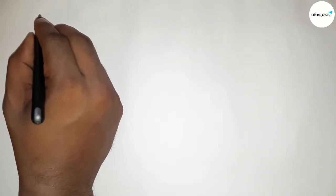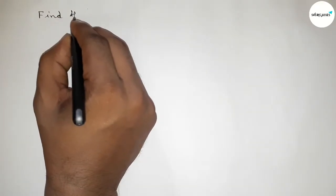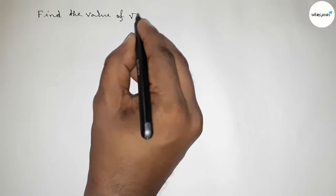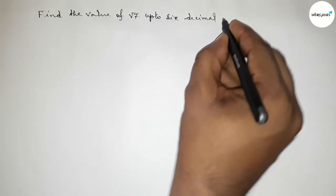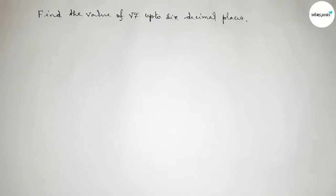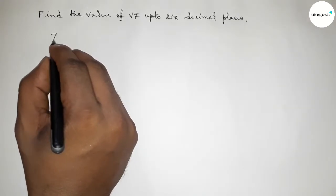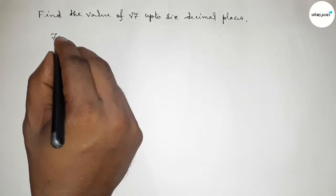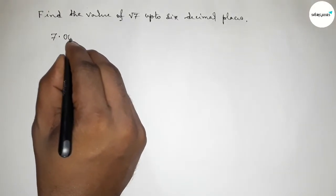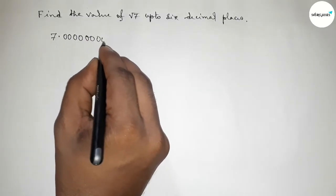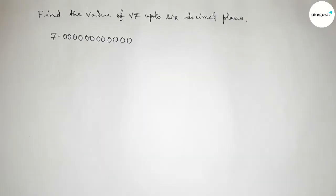Hi everyone, welcome to SI Share Classes. Today in this video we have to find the value of root 7 up to six decimal places in an easy way. Please watch the video till the end. So first of all, write the number 7 here. Now we can take a decimal point beside 7. For up to six decimal places, we have to write 12 zeros, making them as pairs of two.